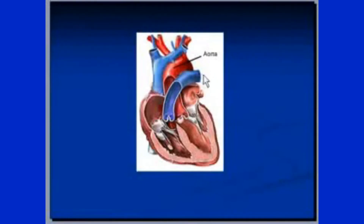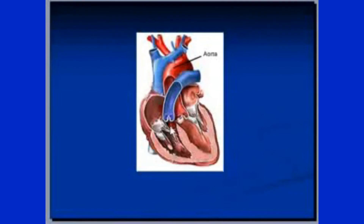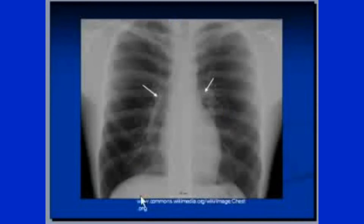The pulmonary artery divides into the left and right pulmonary arteries from behind, taking deoxygenated blood from the right ventricle to the lungs. Both pulmonary arteries are visible here — this is the right pulmonary artery and this is the left pulmonary artery.